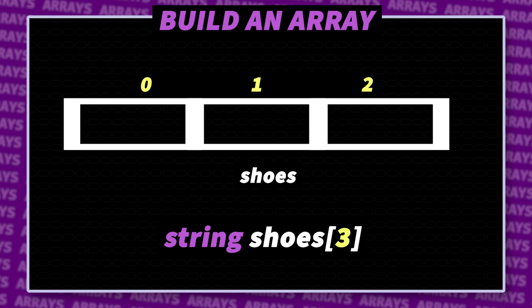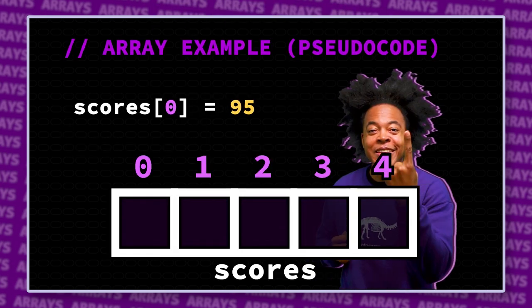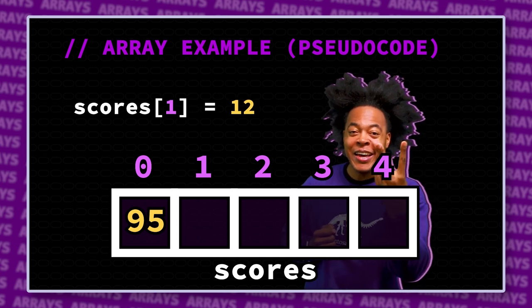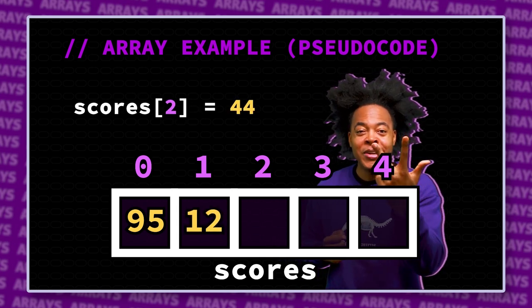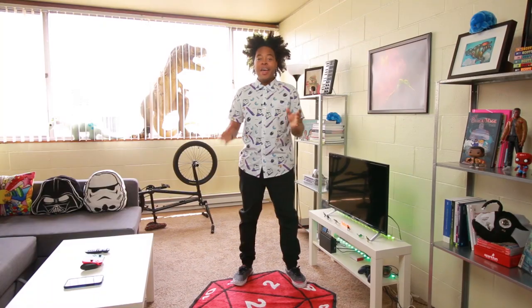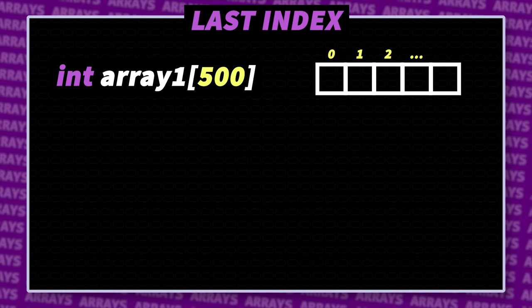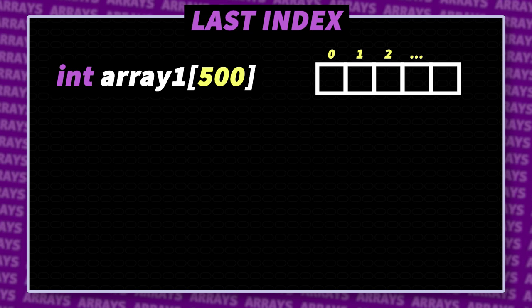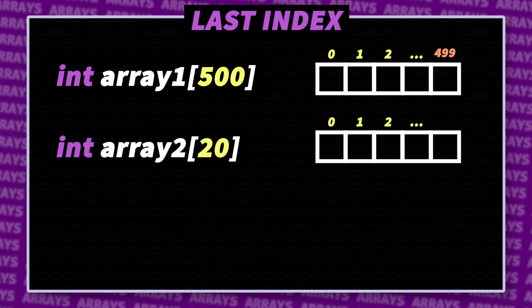Just like an empty shoe cubby when you first put it together. First element — that's index 0. Second element — index 1. Third element — index 2. The pattern continues until size minus 1. The first index is always 0, and the last index is size minus 1. So the last index in a 500-element array would be 500 minus 1, making the last index 499. For a 20-element array, the last index would be 19.